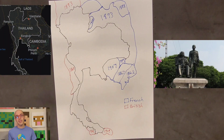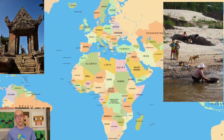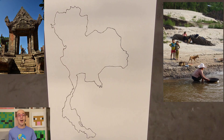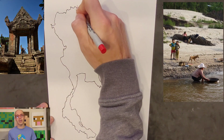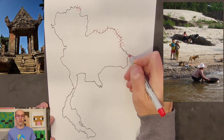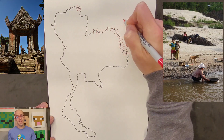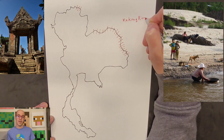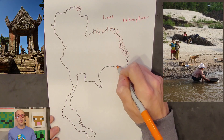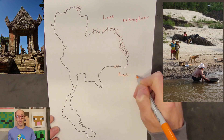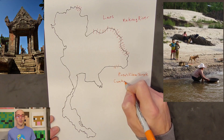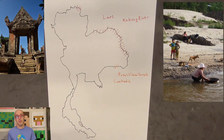By the early 20th century, Siam's borders were more or less defined in the ways we recognize them today. However, there were still some minor disputes and adjustments, especially along the borders with neighboring countries. During the mid-to-late 20th centuries, Thailand's border disputes were centered around neighboring countries, notably Cambodia and Laos. The contentious issues primarily revolved around territorial claims and historical disputes dating back to colonial times.